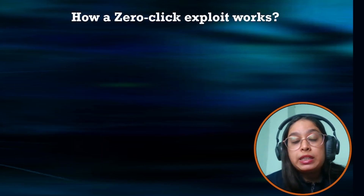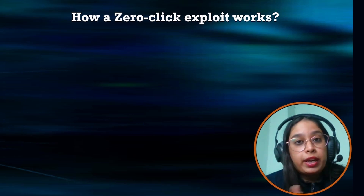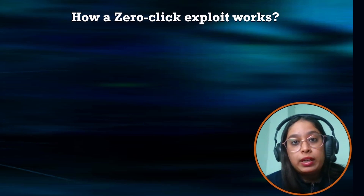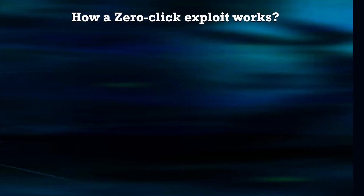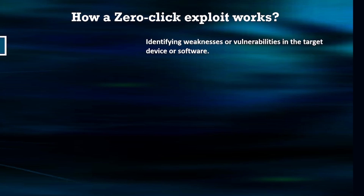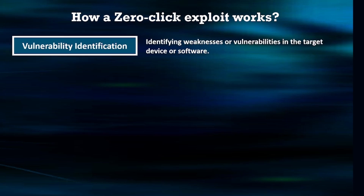Let's look at how a zero-click exploit works — the steps an attacker takes. Here is how the attack typically occurs without the victim's involvement. The first step is vulnerability identification: the attacker identifies a vulnerability in the victim's system or software. This vulnerability could be a zero-day exploit — meaning an undisclosed and unpatched security flaw — or a known but unpatched vulnerability.